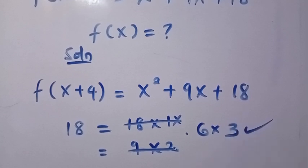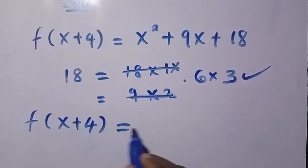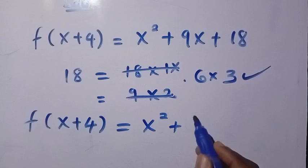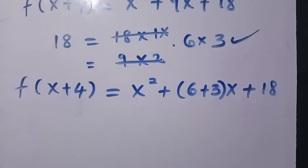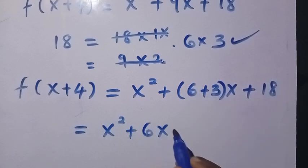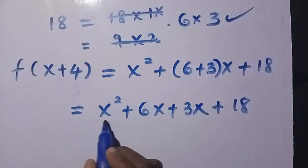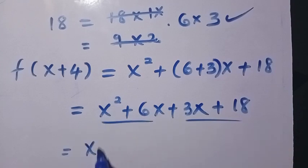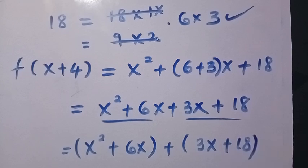Let's replace it. We have f(x+4) equals x² plus, instead of 9x, we change it to 6x + 3x, plus 18. After having this, we have x² + 6x + 3x + 18. By grouping this into two, we have (x² + 6x) + (3x + 18).